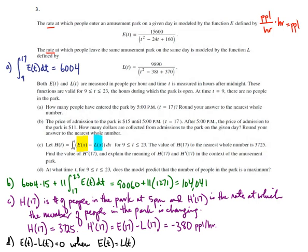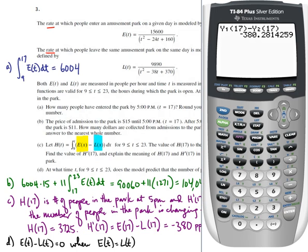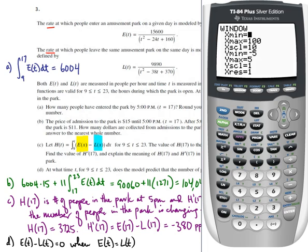Now we can use the calculator to graph this. I'm going to need to think about my window. My x values or my t values are going to go from 9 to 23 by ones. Now my y values, the minimum number of people I can have in the park is zero. What's the maximum number of people that can be in the park? Let's just say it's 10,000. Have that go up by thousands.